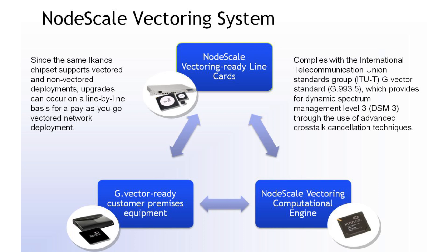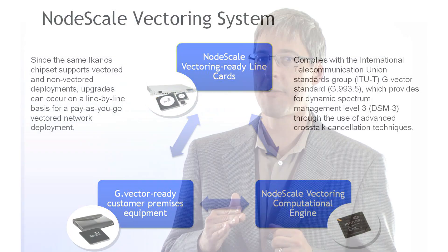By utilizing the existing copper network to deliver fiber-like broadband speeds, Econos node-scale vectoring provides significant cost advantages, saving billions of dollars for service providers and enabling advanced services such as IPTV, teleconferencing, and more.